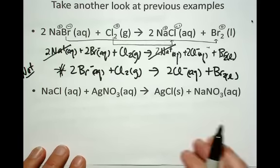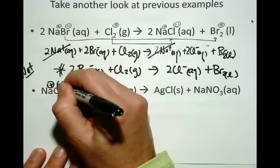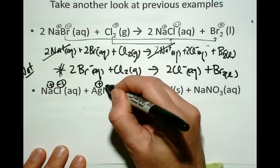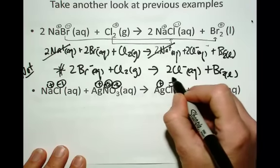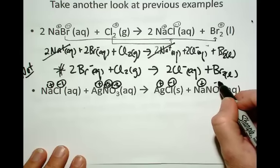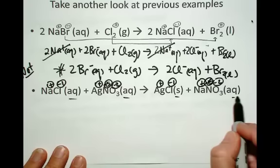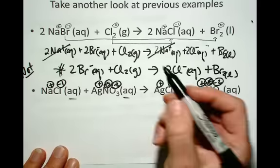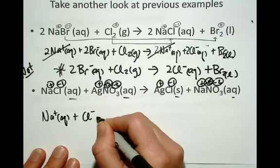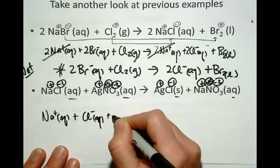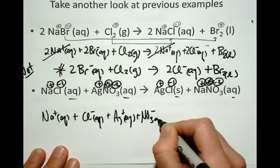Now look at this example again. This is from the last page where we noticed there was no change in oxidation state across this chemical change. Remember, if we see aqueous, aqueous, solid, aqueous, we write it as: sodium ion floating in water, plus chloride ion floating in water, plus silver ion floating in water, plus nitrate anion floating in water.